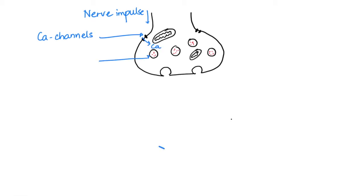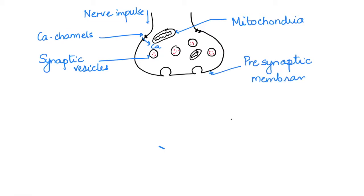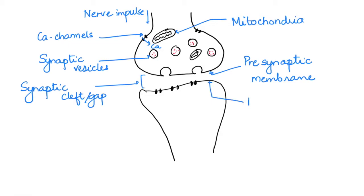It has calcium channels just at the beginning of the synapse. Inside the bulb there are vesicles which are called synaptic vesicles which contain neurotransmitters. There is mitochondria to provide energy and the membrane here is called the pre-synaptic membrane. Next to this will be the dendrite of the next neuron. So this gap here is what we call the synaptic cleft or the synaptic gap, and the membrane here is called the post-synaptic membrane which has sodium channels in it.